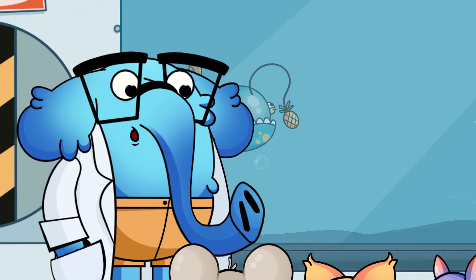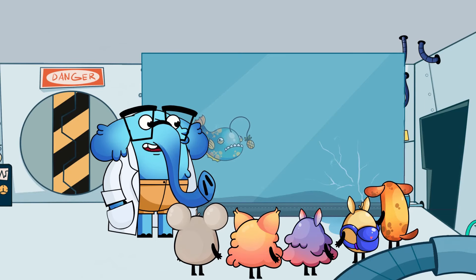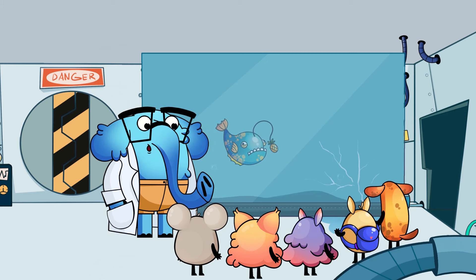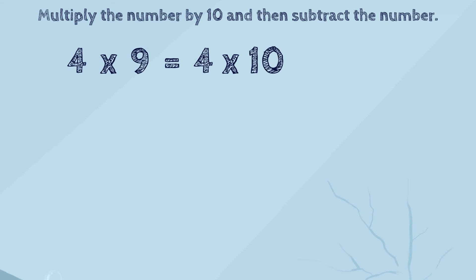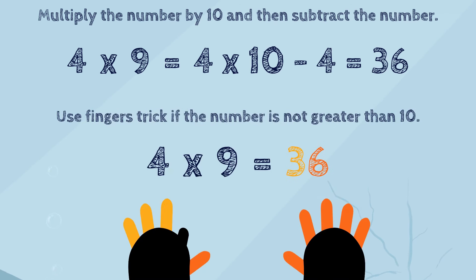Let's repeat what we've learned today. To multiply a number by 9, you can use two different tricks. You can multiply the number by 10, and then subtract the number one time. Or, if the number is less than 10 that you are multiplying the 9 with, you can also use the magic hands trick to find the answer.